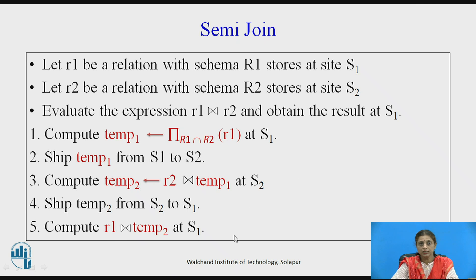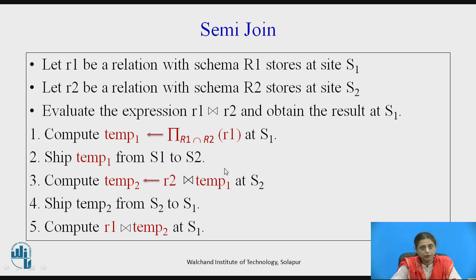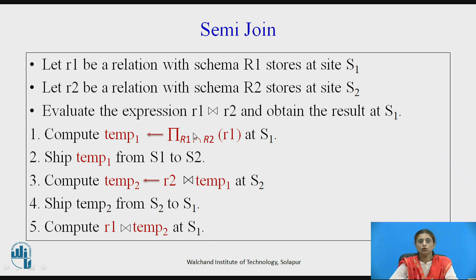If the query R1 join R2 is initiated at site S2 instead, the flow changes slightly. First, the common attributes are projected from R2 and shipped to site S1. At S1 the temporary relation and R1 perform the join, then temp2 is sent from S1 to S2, and the actual join of temp2 and R2 is performed at S2. So where the query is initiated determines the sequence.